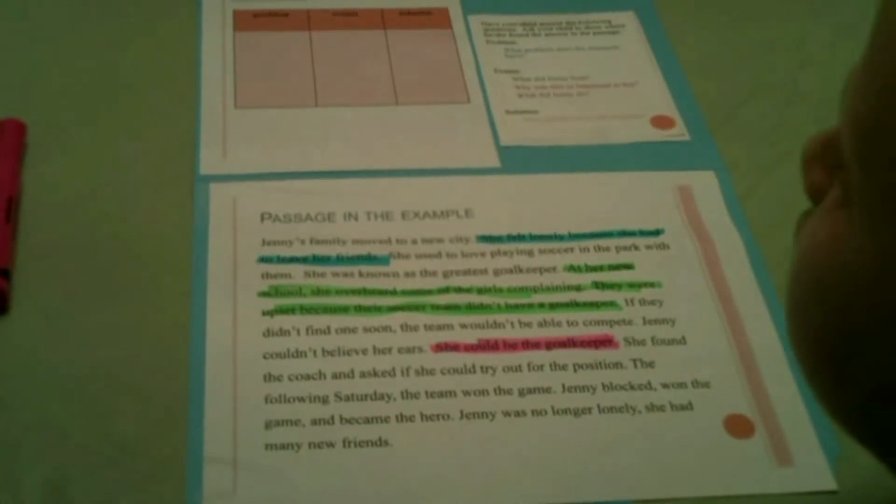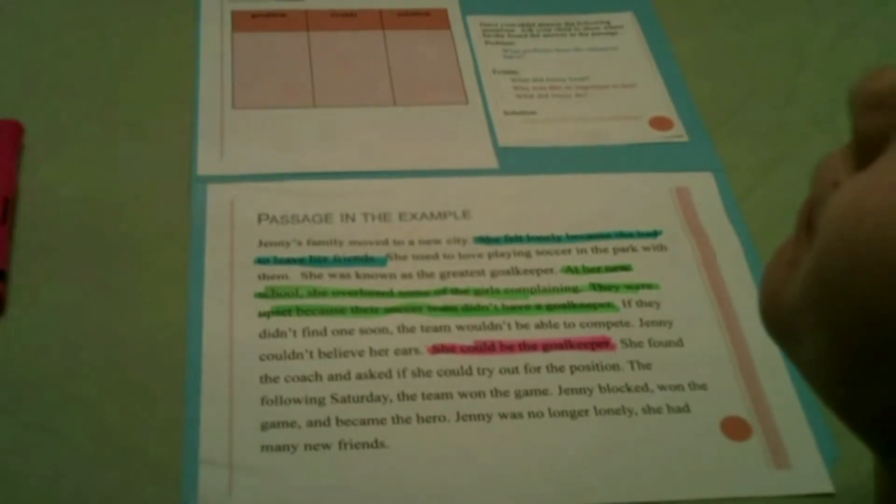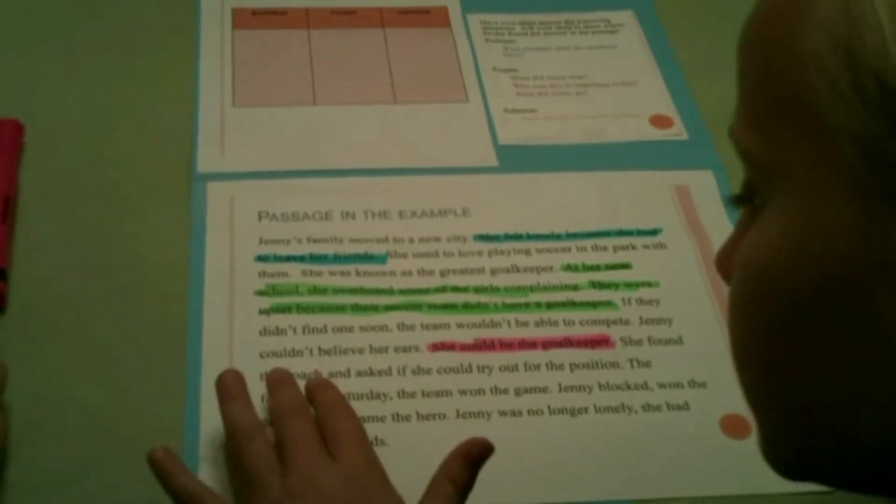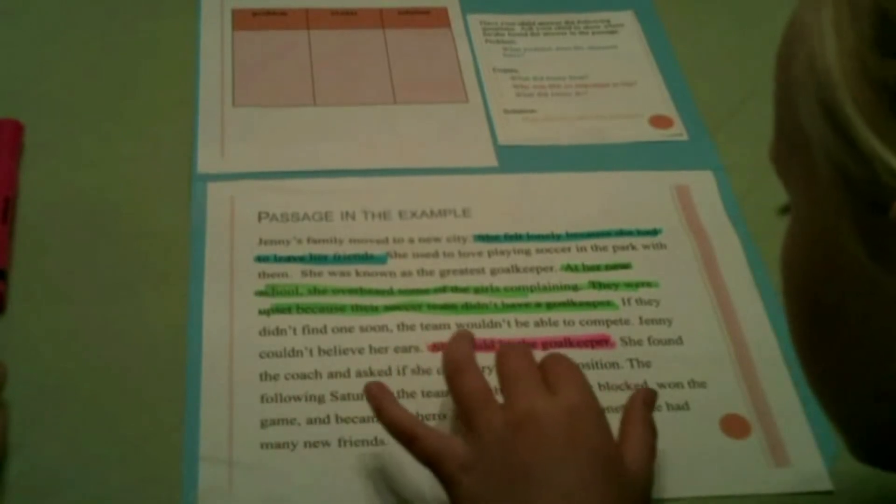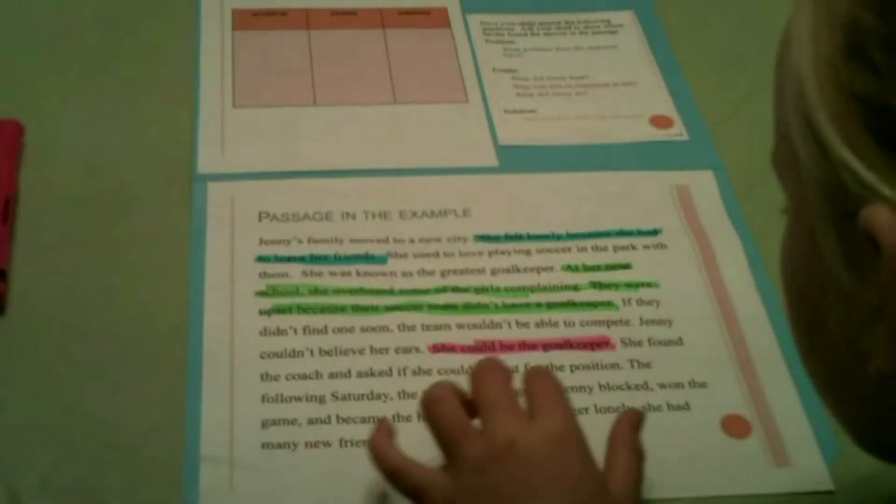Last event in purple. The question is: What did Jenny do? She wanted to be the goalkeeper, so she needed to find out how she could become the goalkeeper. If she asked the coach — let's look in the passage: She found the coach and asked if she could try out for the position.